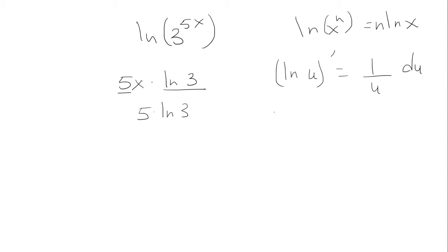So, in our case, u plays the role of 3 to the 5x. So when I take the derivative, that's just going to be 1 over the inside. And then we're going to multiply by the derivative of the inside.